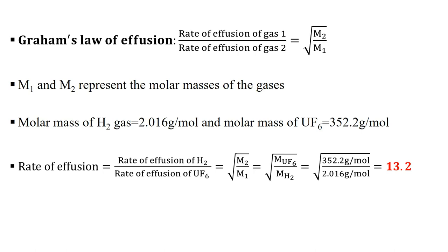The ratio of effusion rates of H2 to UF6 = √(M_UF6 / M_H2) = √(352.2 / 2.016) = 13.2. So hydrogen effuses 13.2 times faster than uranium hexafluoride. We take the square root of the molar mass of the second gas divided by the molar mass of the first gas.